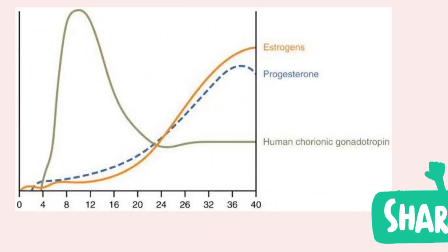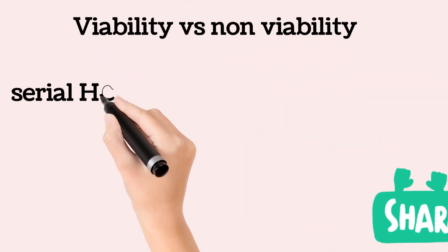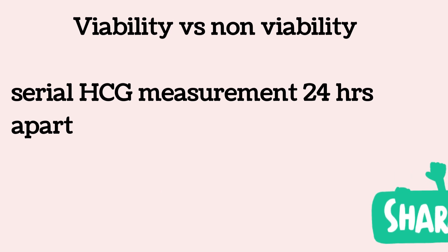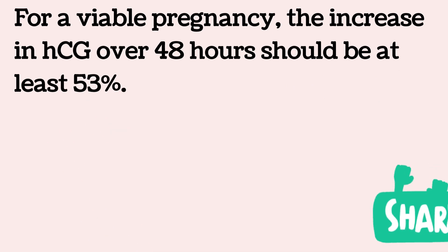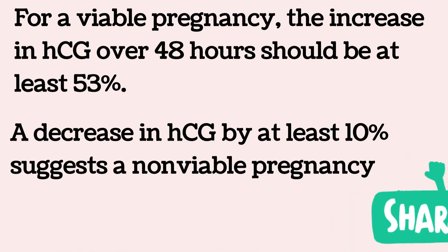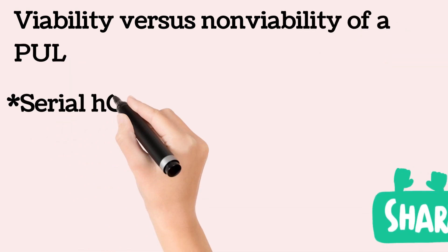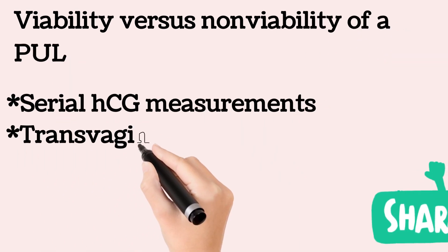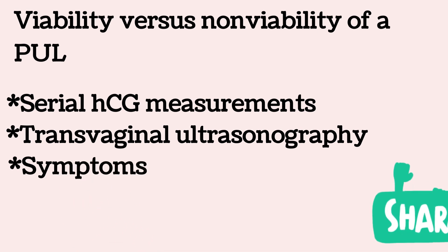If concern exists for ectopic pregnancy, serial HCG measurements spaced 48 hours apart can help clarify viability regardless of location. For a viable pregnancy, the increase in HCG over 48 hours should be at least 53%. A decrease in HCG by at least 10% suggests a non-viable pregnancy. Serial HCG measurement and transvaginal sonography along with symptoms are used to determine viability of a pregnancy of unknown location.